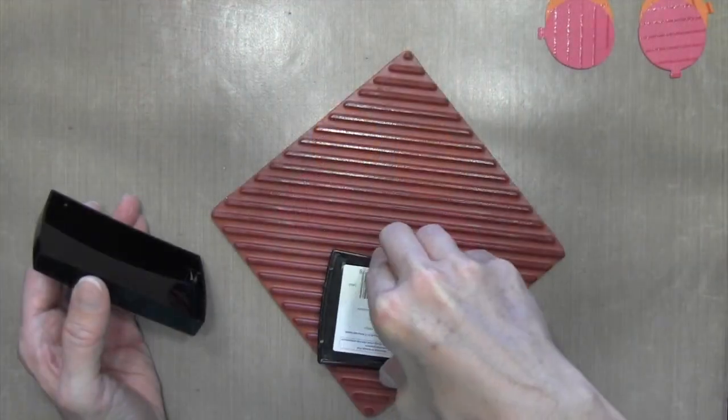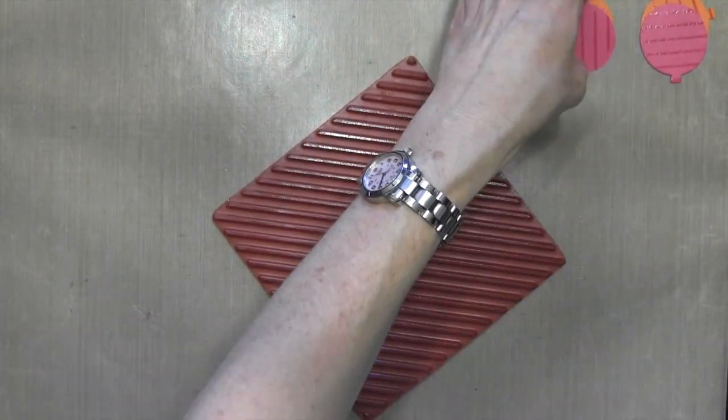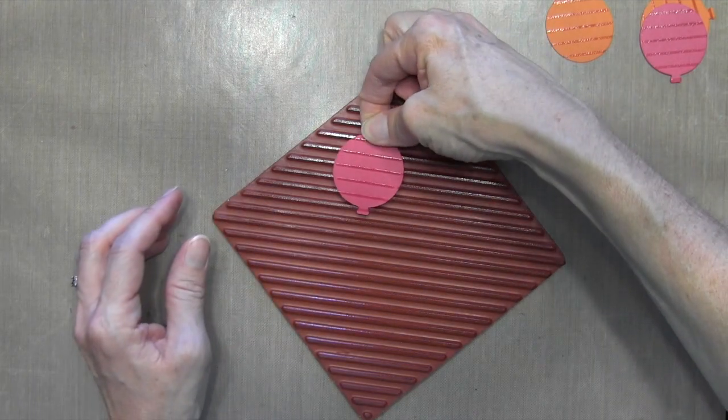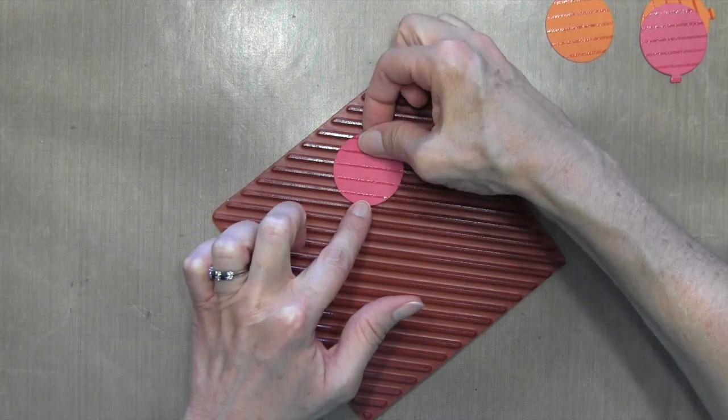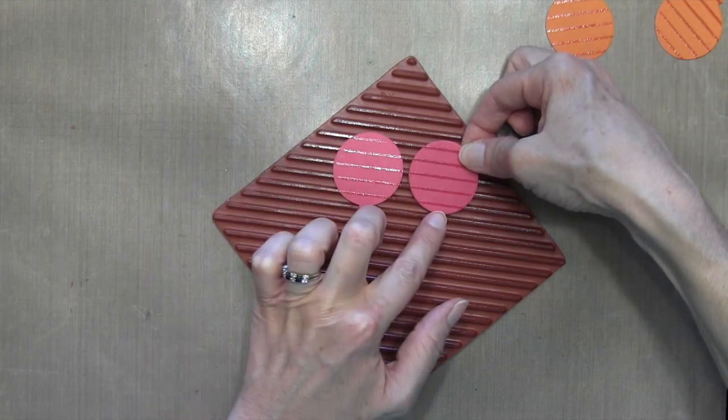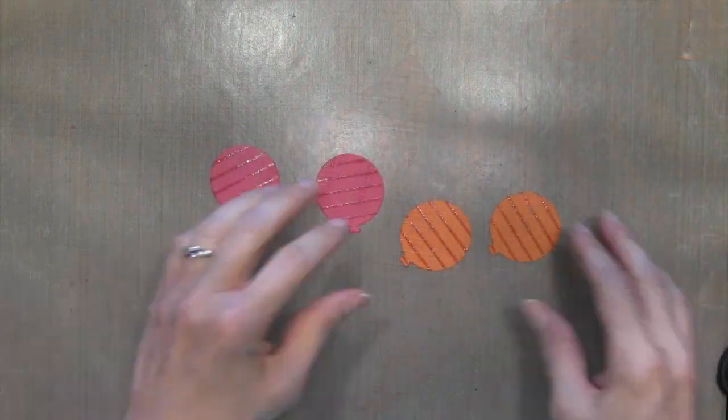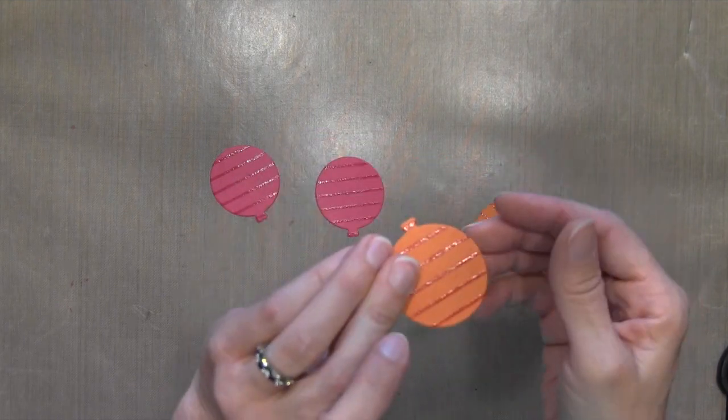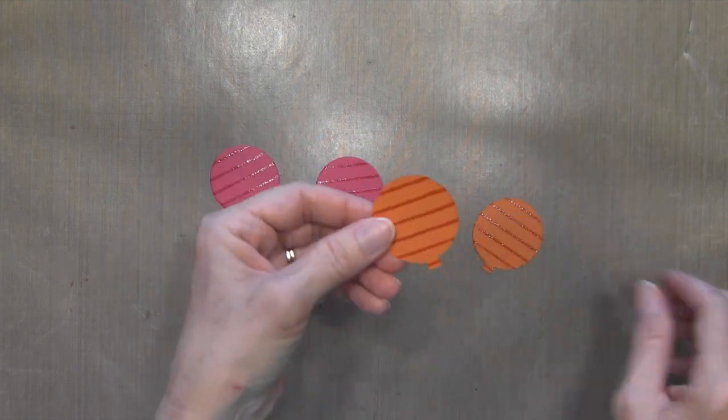And then I'm going to repeat the same exact process for the other side of the balloons. And it's much easier to line these up because you can see the front will line up with the back by just looking at it. So you can line up the stamps with the actual image that you've already stamped. And then I heat emboss those as well. All right, now it's time to crisscross these balloons.